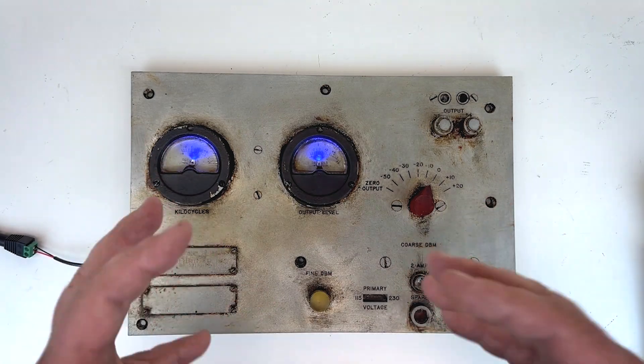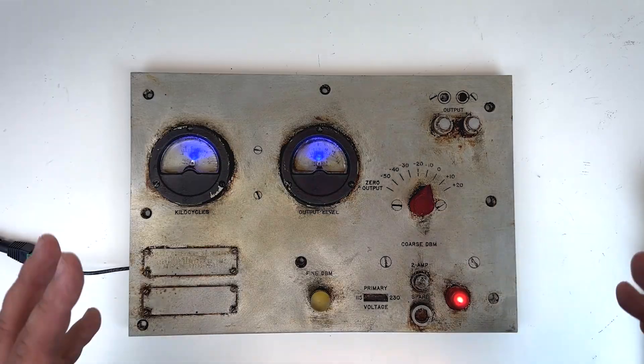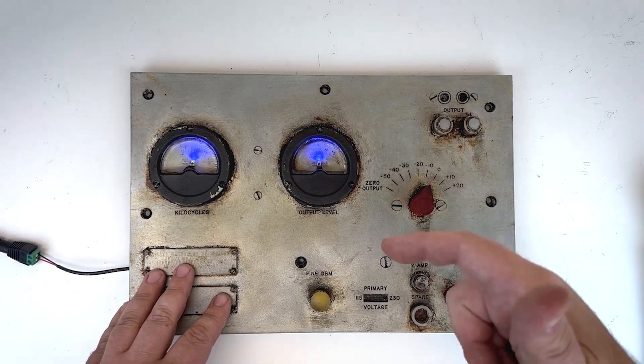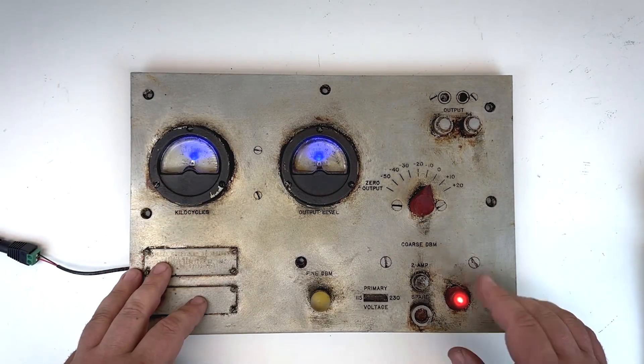All right, so that's a quick look at wiring up a resin hardware panel like this with 12 volt LEDs in it. Of course, if you have any questions, you can always leave a comment on this video or send us an email at sales at FrightProps.com. Thanks so much for watching. See you next time.